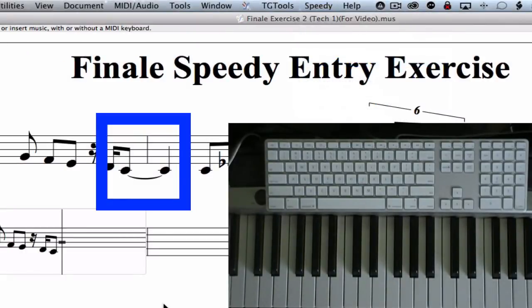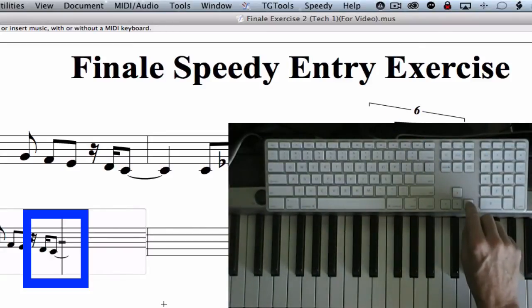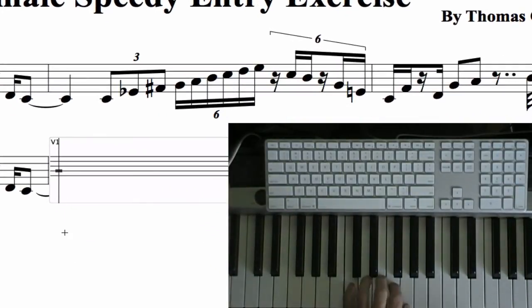To add a tie to a note, simply click the equal sign. Press the right arrow key to move to the next bar. Play and hold middle C while pressing the 5 key.